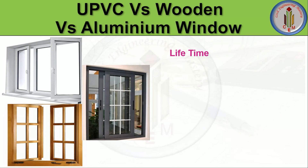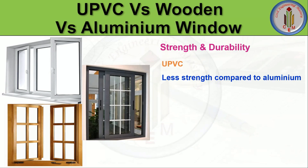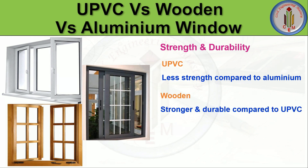Let's start with the lifetime of all three window types. uPVC has a lifetime of 20 to 25 years. Wooden windows last more than 30 years depending on the type of wood used and with proper maintenance. Aluminium windows have a lifetime of 45 years. Regarding strength and durability, uPVC has less strength compared to aluminium. Wooden windows are stronger and more durable than uPVC. Aluminium is stronger than both, with a slim, sleek appearance and large glass surface area, giving an elegant look popular in commercial and public buildings like schools, offices, and government buildings, as well as residential buildings.